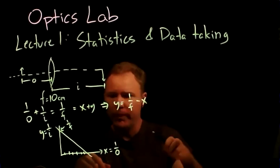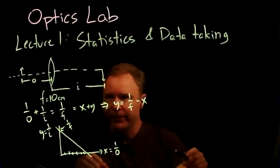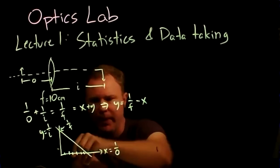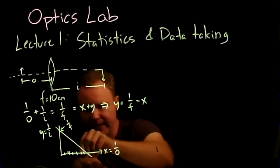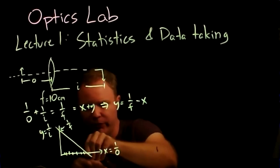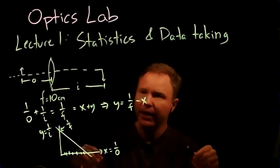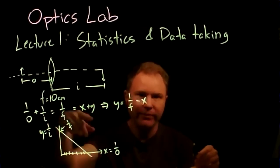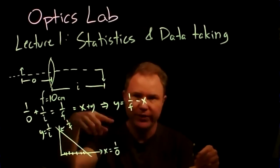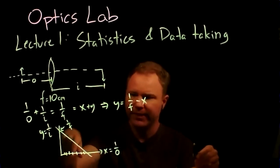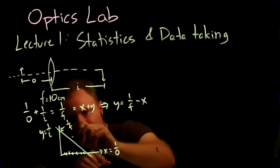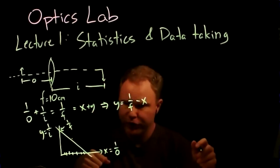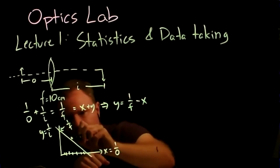By taking say seven data points and repeating each data point five times — cycling through all seven distances five times — you'll get data that has some average and has some uncertainty associated with it.